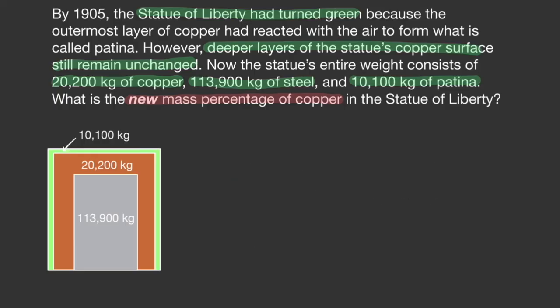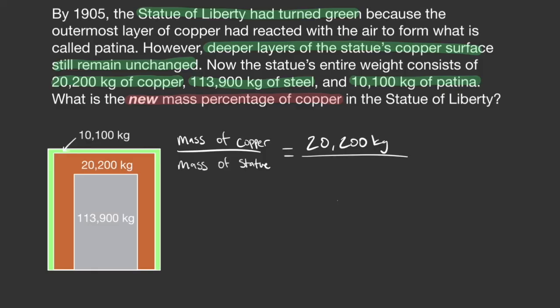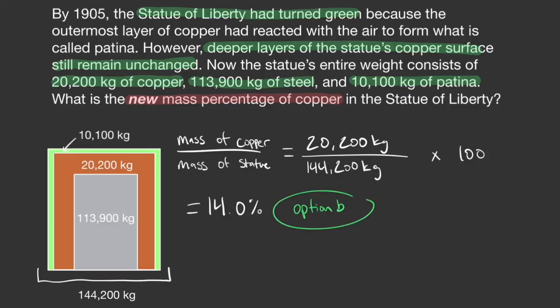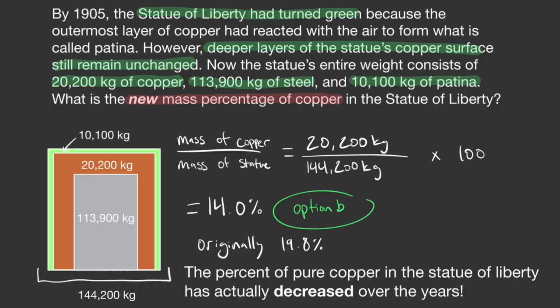We approach this problem the same way as before: divide the mass of the copper part by the mass of the whole statue. The mass of copper is 20,200 kilograms. Adding up all the parts from our picture gives a total of 144,200 kilograms — note this number was not given in the problem, but was easy to get from our model picture. So: 20,200 ÷ 144,200 × 100 = 14.0%. Originally, the mass percentage of copper was 19.8%, but it has decreased as oxygen is incorporated to make the patina.